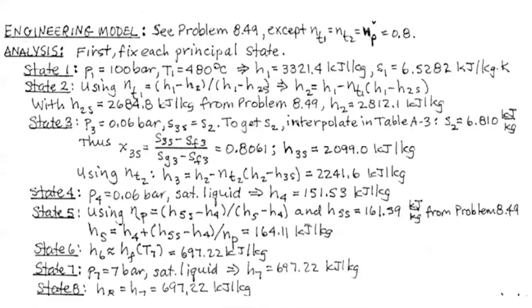When isentropic efficiencies are added (e.g., 80% for both turbine and pump), the TS diagram changes — instead of vertical drop lines, the turbine processes slope to the right due to entropy generation. You must recalculate the actual exit states using the isentropic efficiency definition: η_turbine = (H1 − H2_actual) / (H1 − H2_isentropic).